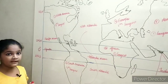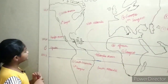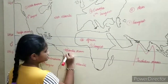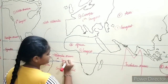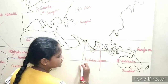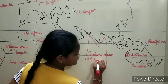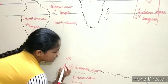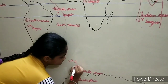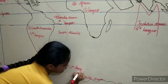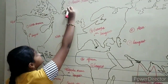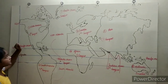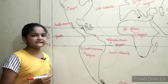Now we will see the oceans by size. First largest: Pacific Ocean. Second largest: Atlantic Ocean. Third largest: Indian Ocean. Fourth largest: Antarctic Ocean. And the smallest: Arctic Ocean. Biggest is Pacific Ocean and smallest is Arctic Ocean — easy to remember.